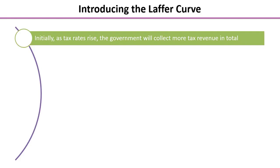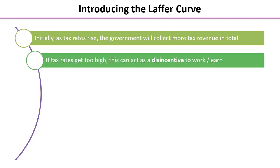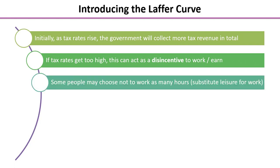Here are some key points. Initially, as tax rates rise, the government will collect more tax revenue in total — people carry on working just as they have been, but a little bit more of their income gets taken in tax. However, if tax rates get too high, this then acts as a disincentive to work or earn. Some people might choose not to work as many hours as they have been doing — in effect, they substitute leisure time for work time.